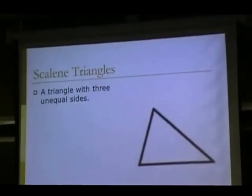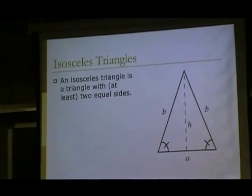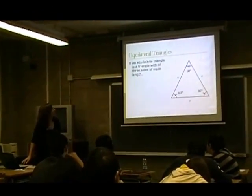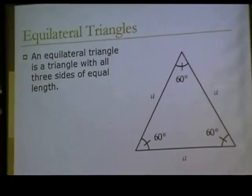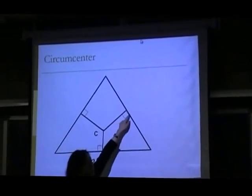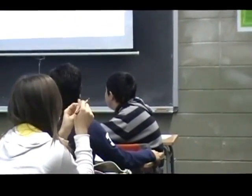A scalene triangle is a triangle with three unequal sides. Celci, can you read the isosceles triangle, please? The isosceles triangle is a triangle with at least two equal sides. At least? What's the minimum? Two sides equal. And then an equilateral triangle is a triangle with three equal sides. With a circumcenter — which lines are these ones? You don't know? Any?